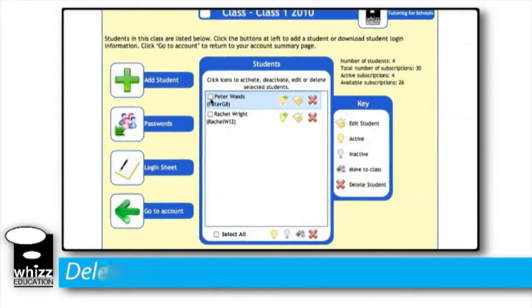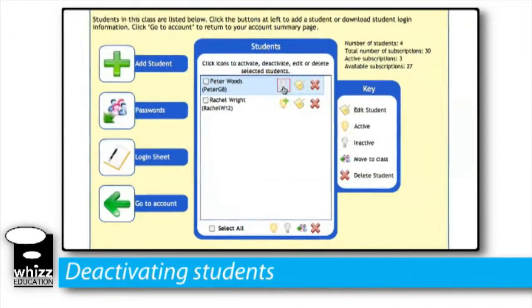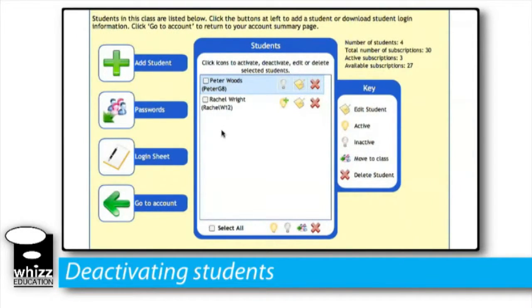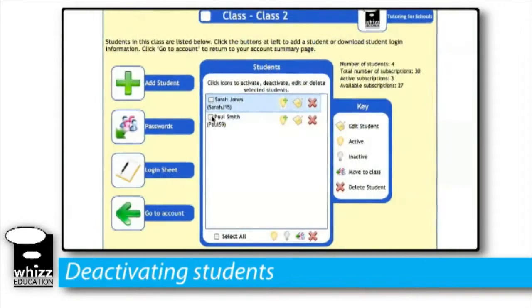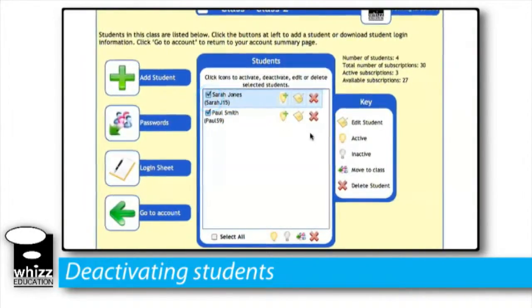To deactivate an individual student simply click the light bulb next to their name ensuring it turns grey. To deactivate a group of students select the students you want to deactivate and click the grey light bulb here.